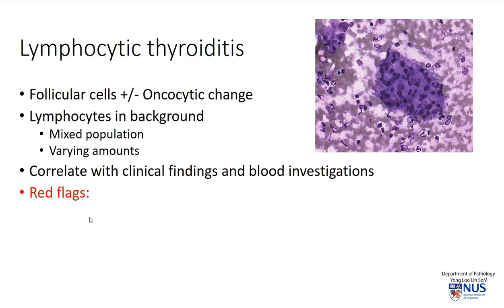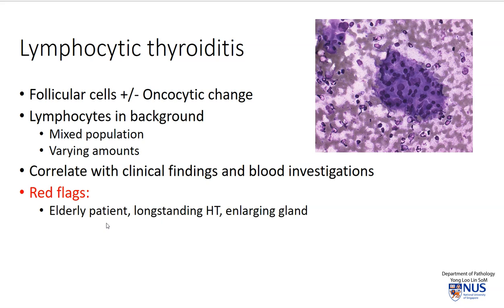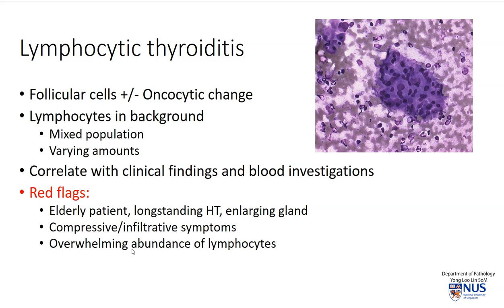A few red flag signs may indicate we are dealing with lymphoproliferative disease or lymphoid malignancy. Typically these patients are a little bit older, with a long-standing history of Hashimoto thyroiditis, and very importantly they may present with a progressively enlarging thyroid gland or thyroid nodule. Compressive or infiltrative symptoms are also worrying, and on cytology we may sometimes only see an overwhelming abundance of lymphocytes.